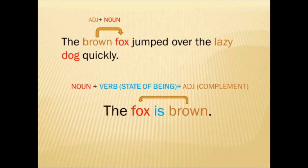If you notice, the verb in this case is not an action verb, but a state of being verb. When we use states of being verbs, oftentimes the idea that follows is going to be what we call a complement. In this case, the complement is an adjective, because it's going back to complement — or basically to add more information — with the noun. So in this case, 'the fox is brown,' we can identify that brown is describing the word fox.